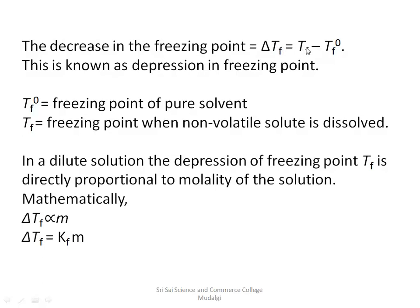The decrease in the freezing point is given by the formula: Delta TF equals T naught F minus TF. Here T naught F is the freezing point of the pure solvent, and TF is the freezing point of the solution where the non-volatile solute is dissolved. This difference is referred to as depression in freezing point, Delta TF.